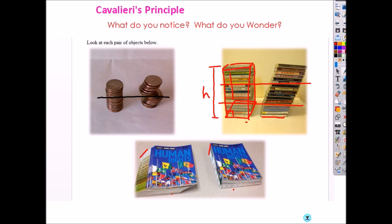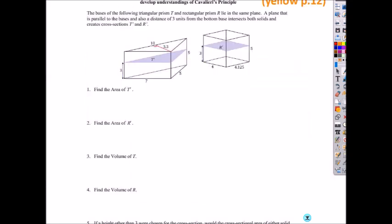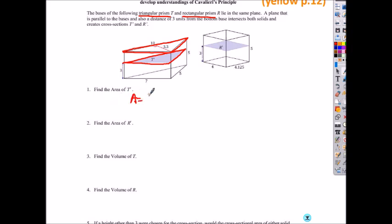So now let's look at page 12, SLT 6. Let's find the area of T prime, meaning the area of this triangle. They said the first one is a triangular prism and the second one is a rectangular prism. So let's find the area of T, this triangle — same as the base. So how do you find the area of a triangle?